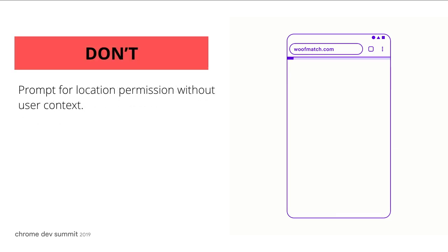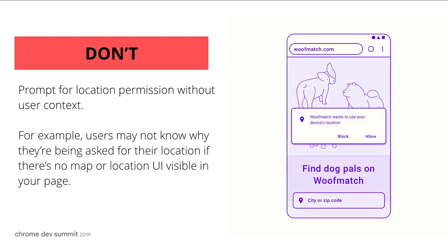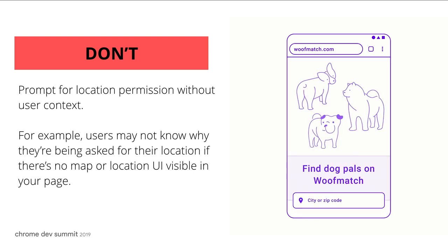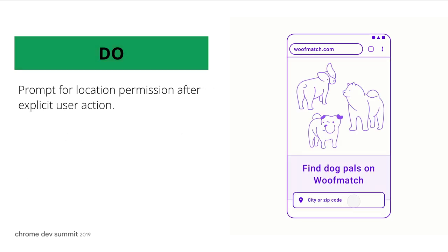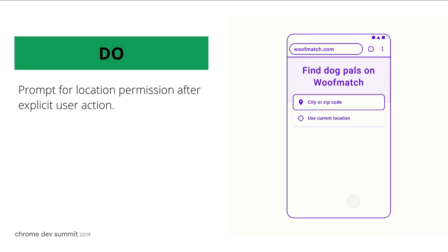Don't prompt for location permission without user context. For example, users may not know why they're being asked for their location if there's no map or location UI visible on the page, or if it's below the fold. Please do prompt for location permission after an explicit user action.